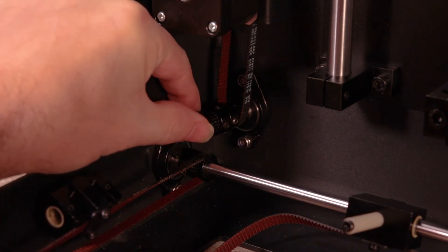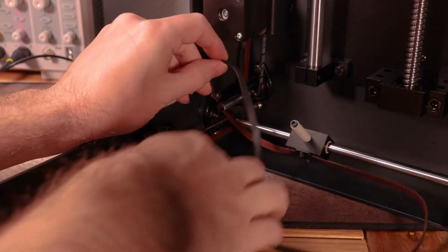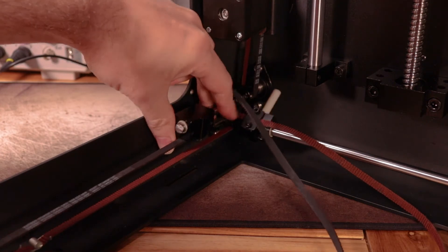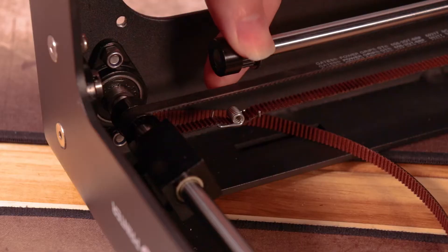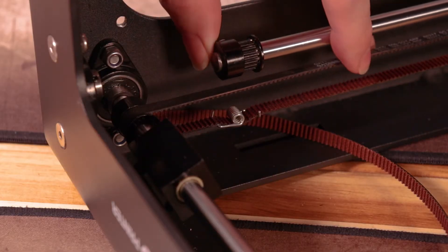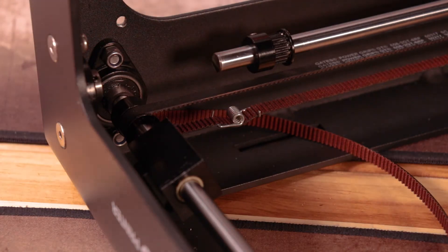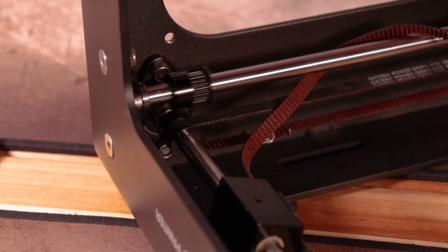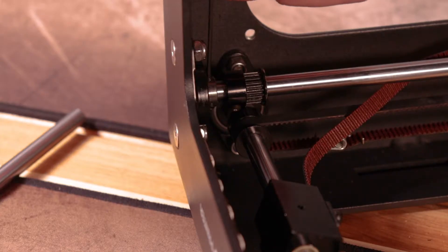Again, orientation matters on almost every one of these pulleys. Loop the back belt around the rod and continue pushing the rod through. Install the left slide. Push the rod through more and install the last pulley. Loop the front belt around it and push the rod into the bearing. Finally tighten the set screws.